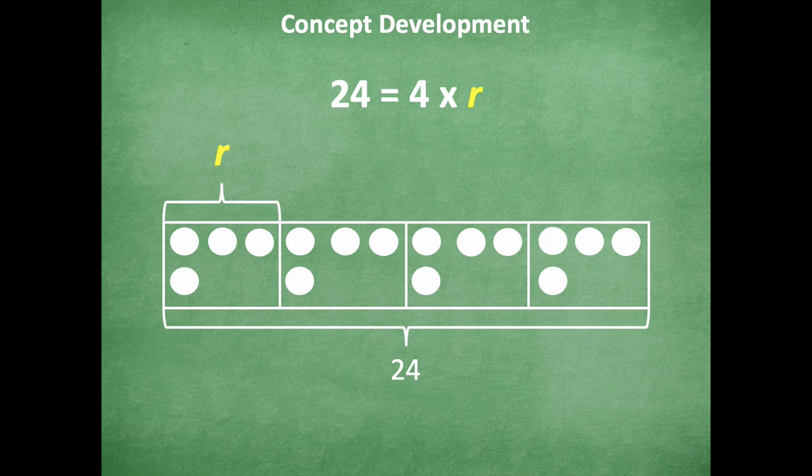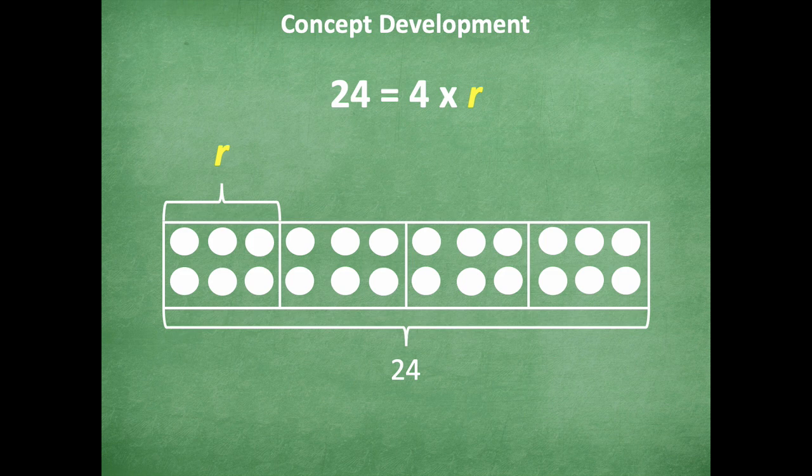13, 14, 15, 16, 17, 18, 19, 20, 21, 22, 23, 24. So as I go through and I look at this, I say, oh my gosh, look at r. Now I've counted all the way to 24 in my four groups. r equals 6. Okay, awesome job with that one.